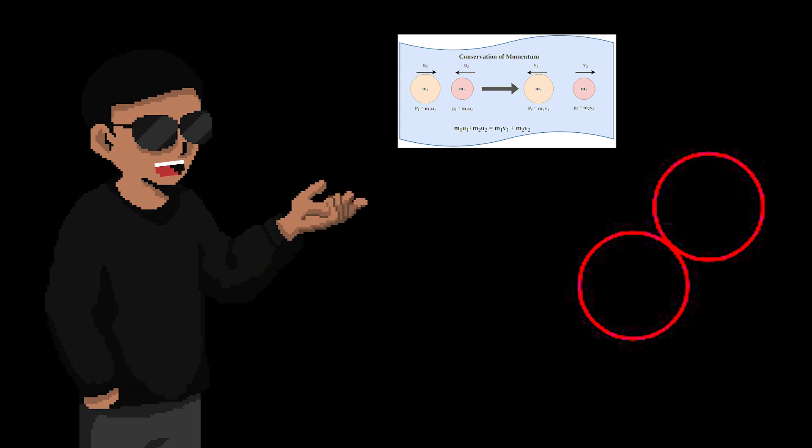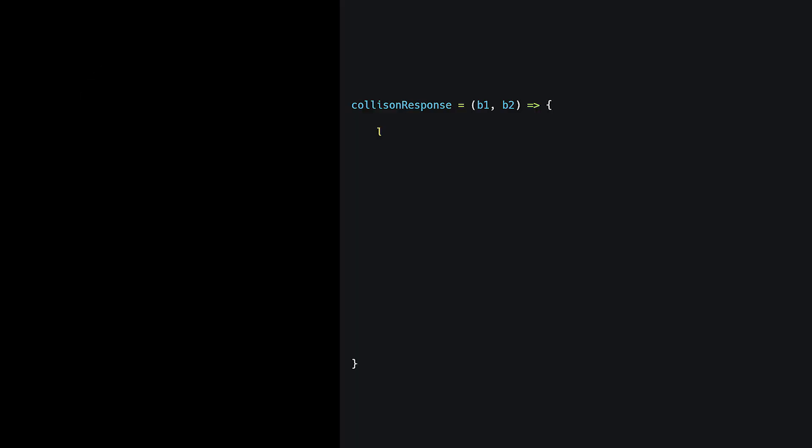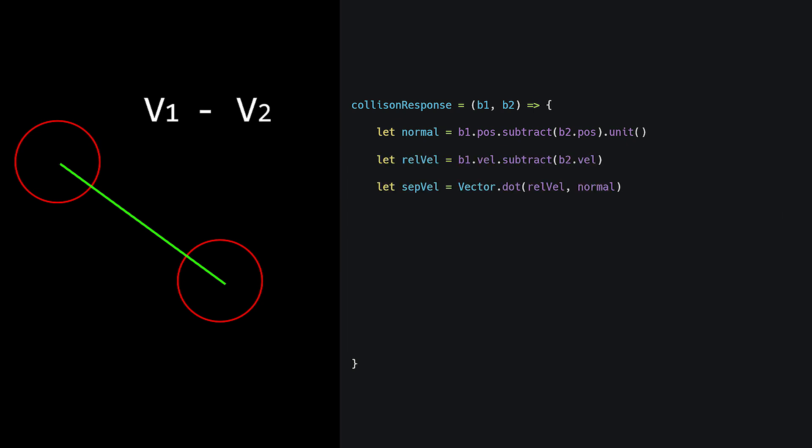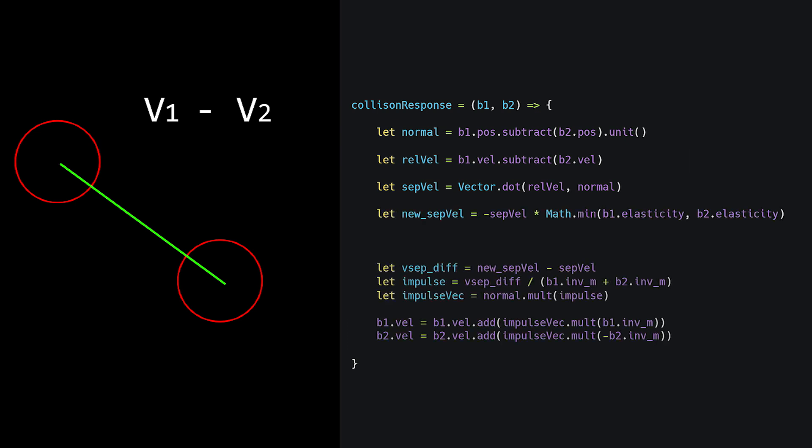We implement collision response by applying Newton's law of conservation of momentum and conservation of kinetic energy. We first calculate the normal vector which is the line drawn from the first object center to the second object center. We calculate its relative velocity which is the difference between the two balls velocity, the separation velocity which is the dot product of the two, and the new separation velocity which is the normal multiplied by the opposite side of the old separation velocity. Then we apply them to both objects accordingly and we get.